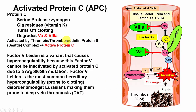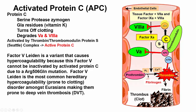Activated protein C is a protein made by the liver, but it is activated by a complex of thrombin and thrombomodulin. Once excess thrombin is made to form a big clot, that excess thrombin binds to thrombomodulin. Some of it also gets inhibited by antithrombin 3, but that only gets activated by heparin. The thrombin-thrombomodulin complex then activates protein C, which binds to protein S to form activated protein C.